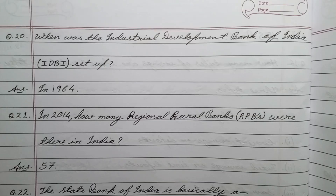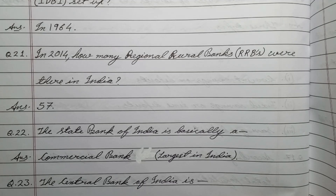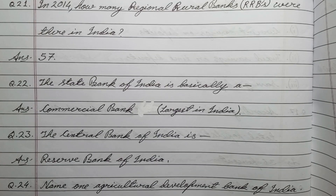Question number twenty: when was the Industrial Development Bank of India set up? Answer: in 1964. Question number twenty-one: in 2014, how many regional rural banks were there in India? Answer: 57. Question number twenty-two: the State Bank of India is basically a? Answer: commercial bank. Question number twenty-three: the central bank of India is? Answer: Reserve Bank of India.